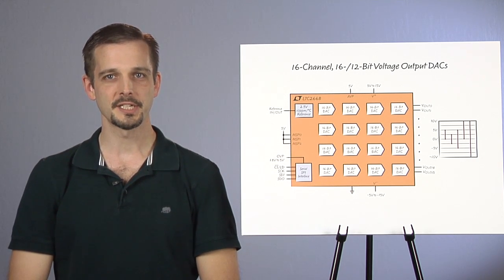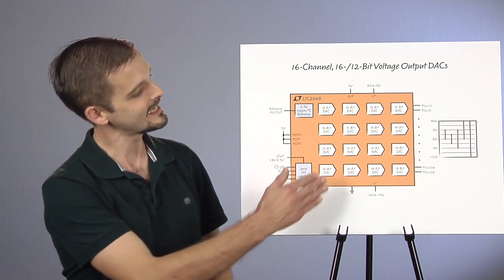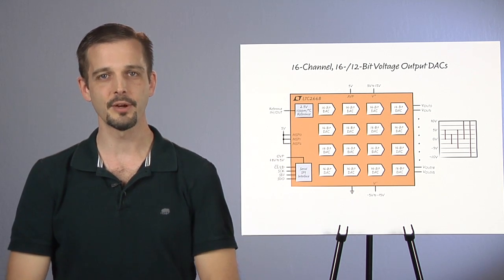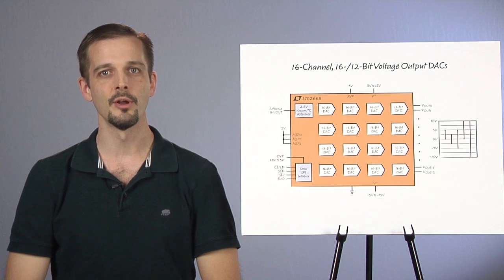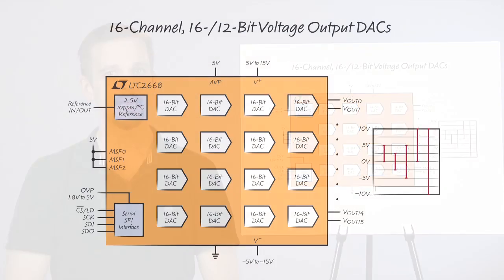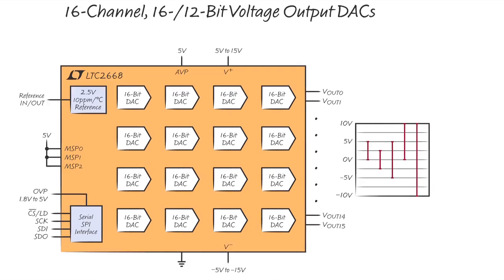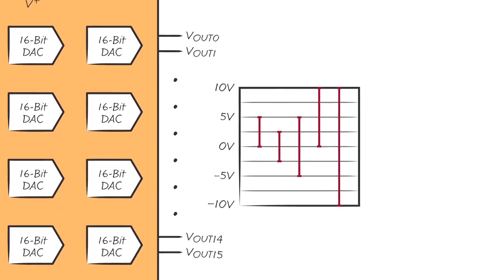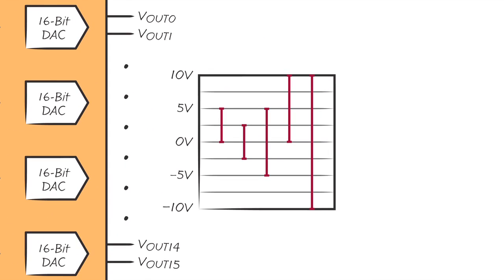The LTC2668 is a revolutionary product featuring 16 16-bit DACs in a very tiny 6x6mm 40-pin QFN package with a rich set of features. Each output can be set independently to one of five ranges: 0-5V, 0-10V, 2.5V Bipolar, 5V Bipolar, and 10V Bipolar, all derived from a single 2.5V reference.